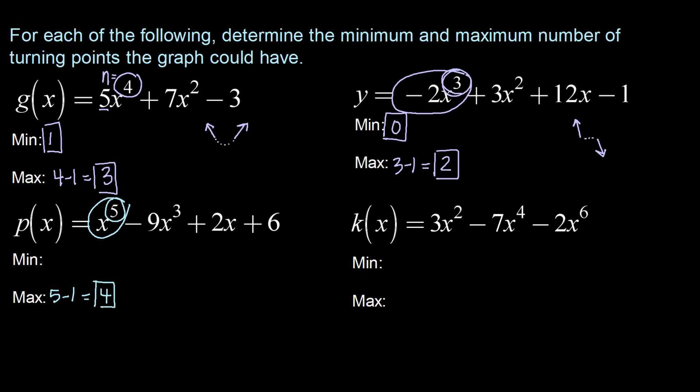And again because this is an odd degree polynomial we will have opposite end behavior. Positive lead coefficient means up to the right and down to the left, so we don't have to turn around to connect those. So minimum of zero turning points.